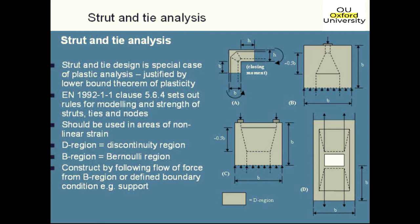The Eurocode talks about D-regions and B-regions as the means by which you start idealizing your structure. A D-region is a discontinuity region — D standing for discontinuity or disturbance. We also have B-regions, B standing for Bernoulli or beam. We construct our strut-tie models by following the flow of force from the B-regions, where stresses can be predicted from beam theory, back to the disturbance area. The D-regions are the shaded regions in these diagrams.